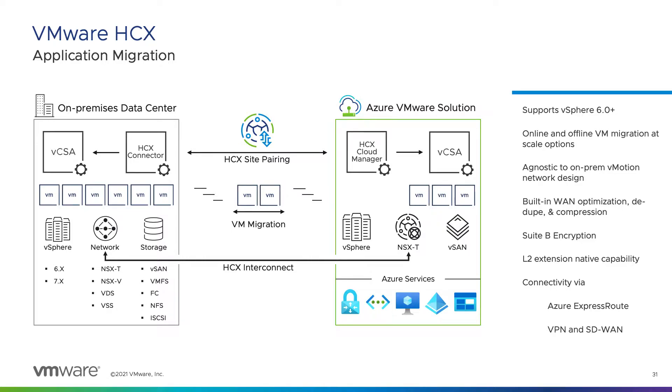HCX supports up to 25 site pairs with connectivity via Azure ExpressRoute, VPN, and SD-WAN.